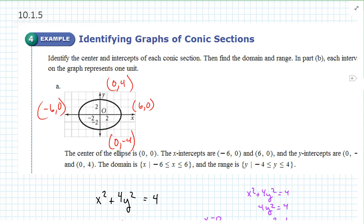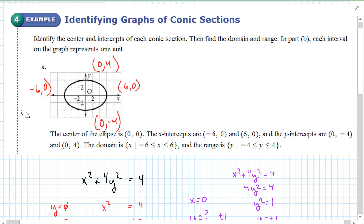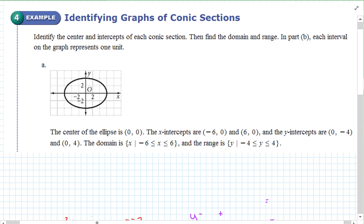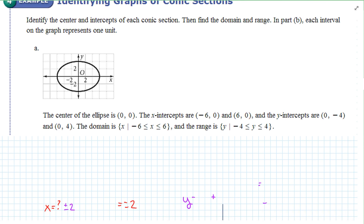And then the last one is identifying the graphs of conic sections. So let's just look at this real quick while I erase everything. Identify the center and the intercepts of each conic section. Then find the domain and range. In part b, each interval on the graph represents one unit.